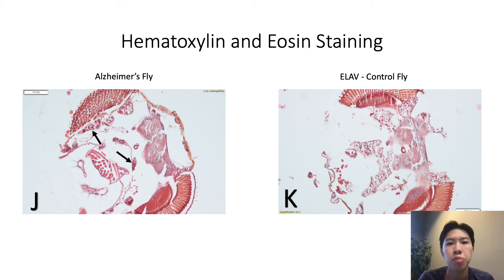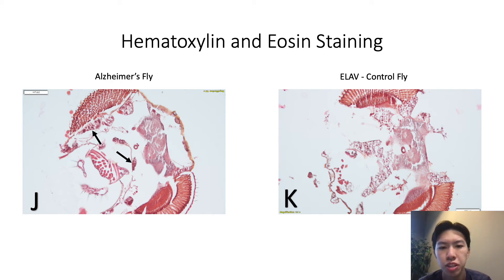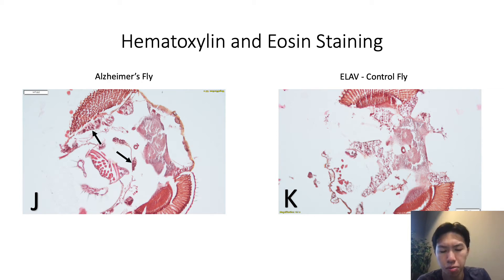These are some of our preliminary results from the H&E staining. On the left in figure J is our Alzheimer's sample, and figure K is our ELOF sample. The purpose of H&E staining isn't really to isolate specific proteins, but to show the nuclear detail in the cells themselves. We primarily use H&E staining to show contrast within the sample and to see our sections, as well as the counterstain after completion of the primary-secondary antibody staining so that results stand out more.